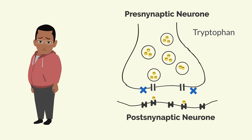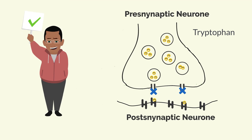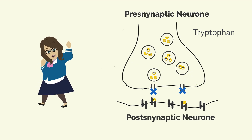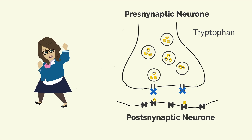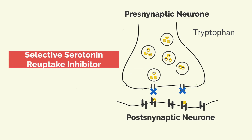Zoloft inhibits the transport mechanism that takes the serotonin back into the presynaptic neuron, thereby increasing the concentration of serotonin available to interact with the receptors, ultimately resulting in the serotonin binding to the receptors for a longer period of time, leading to that elevation of mood expected when one takes Zoloft or Sertraline. Hence, in essence, Zoloft or Sertraline inhibits the reuptake of serotonin back into the presynaptic neuron — and that is where it derives its name from: selective serotonin reuptake inhibitor.